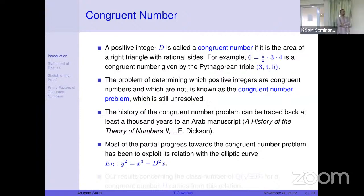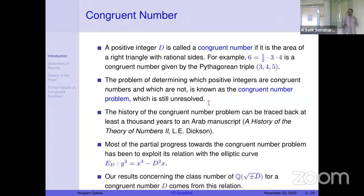In fact, if you have read Cornell's book on modular forms and elliptic curves, it is a nice text that includes congruent numbers. Our results concerning the class number of quadratic fields will also use this connection with elliptic curves.